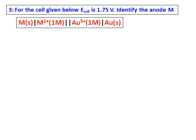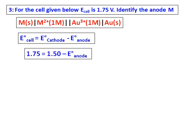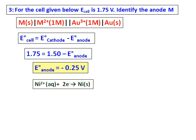For the final problem, E_cell is given and you must identify the anode. E_cell = E_cathode − E_anode. Substituting E_cell = 1.75 V and E_cathode = 1.50 V from the table, E_anode = −0.25 V. Looking at the reduction potential table, the reaction with −0.25 V corresponds to nickel. Therefore, the anode is nickel.